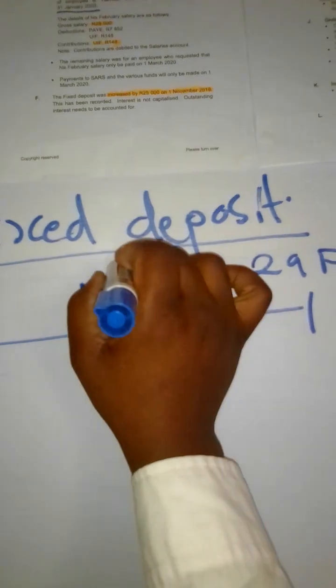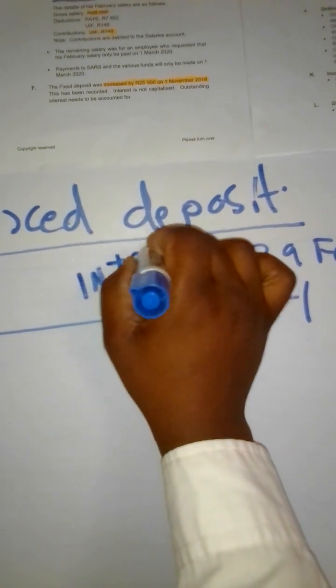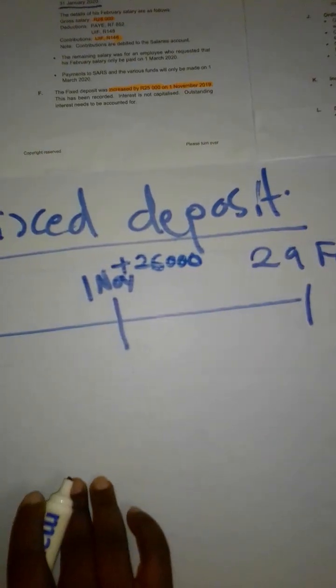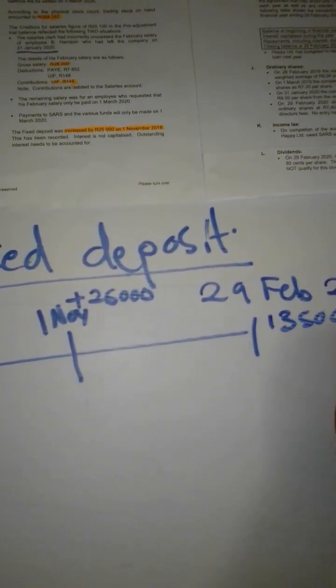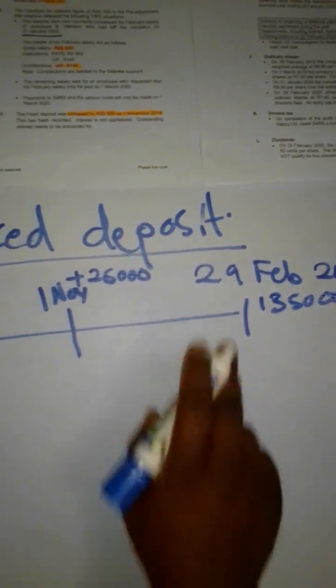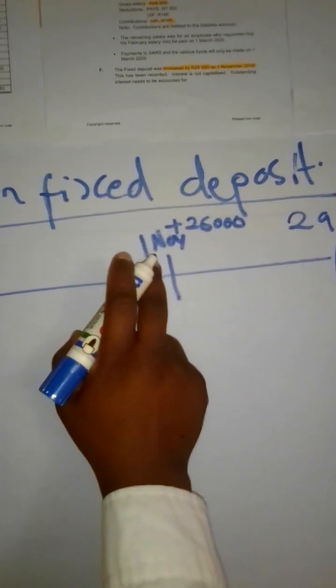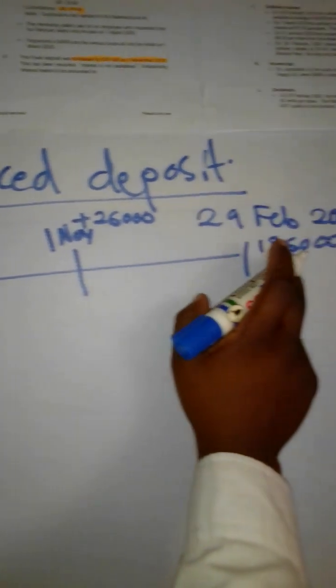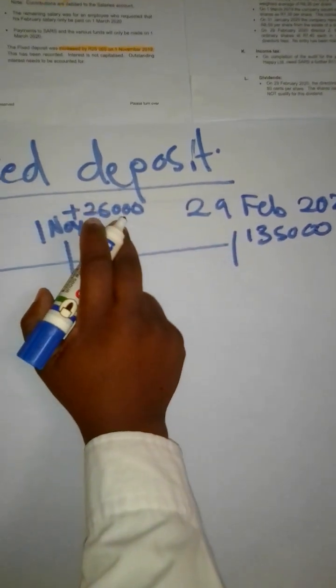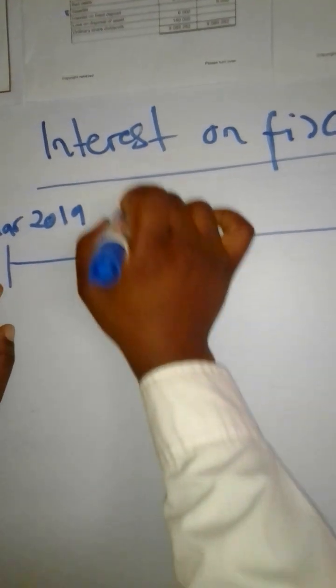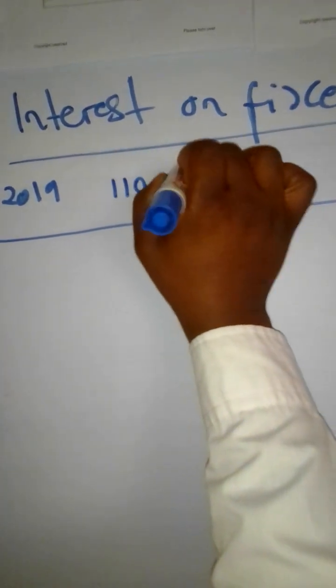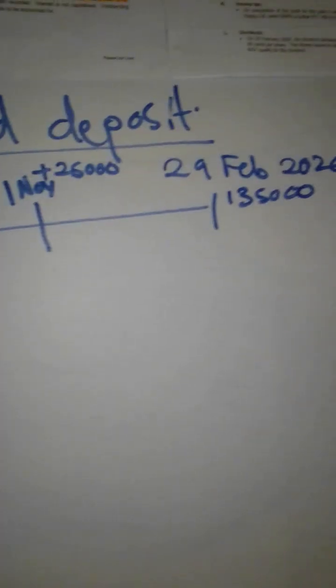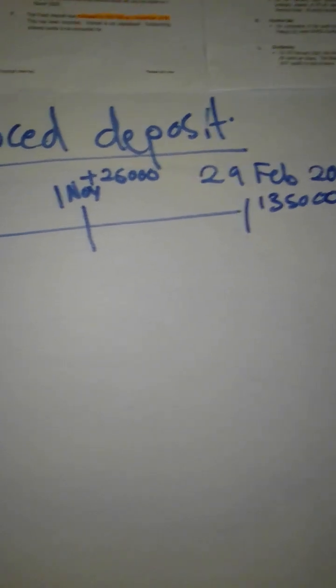So we are going to indicate 1 November is going to be a plus $25,000. We know that at the end here it's $135,000. So in order for us to know how much it was from 1 March up to maybe 30 October, we simply say $135,000 minus $25,000. So which means this period, the fixed deposit was actually $110,000. You can check with your calculator, $135,000 minus $25,000 to give you $110,000.